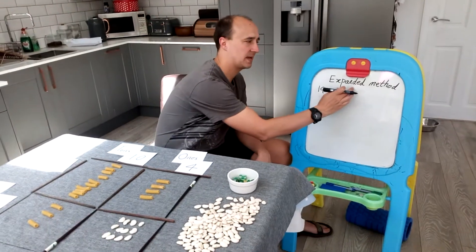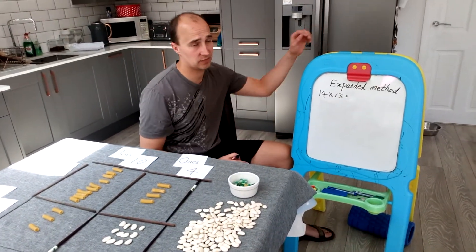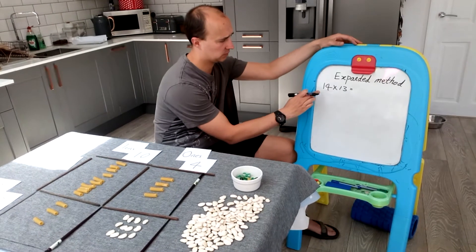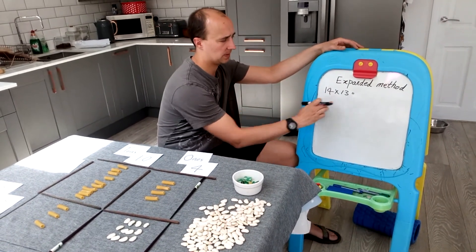Hi, so now we're going to look at expanded method multiplication for year 3 and 4, and we're going to look at 14 multiplied by 13.